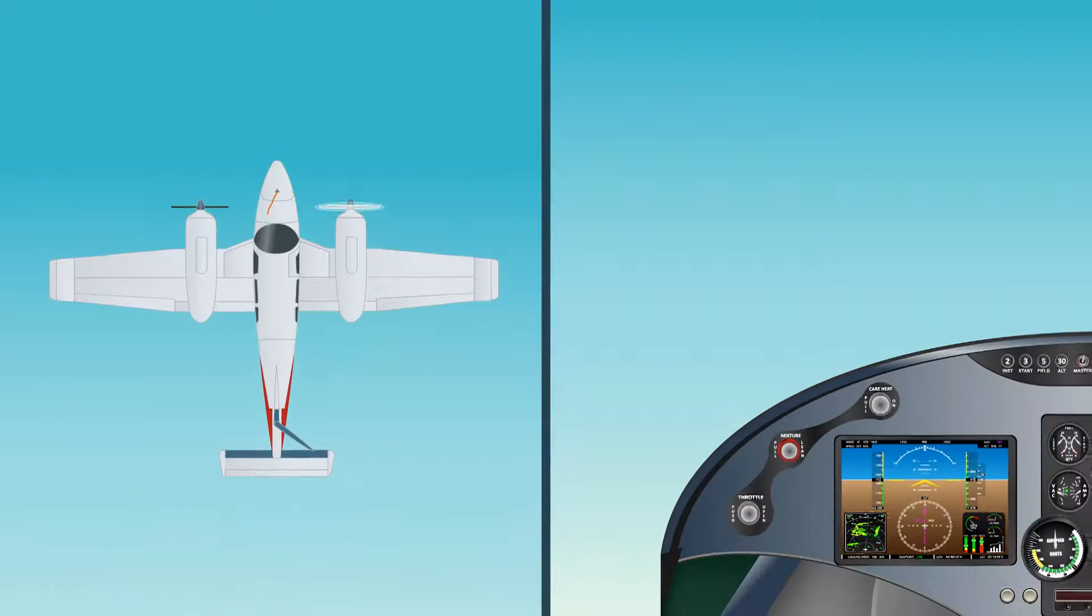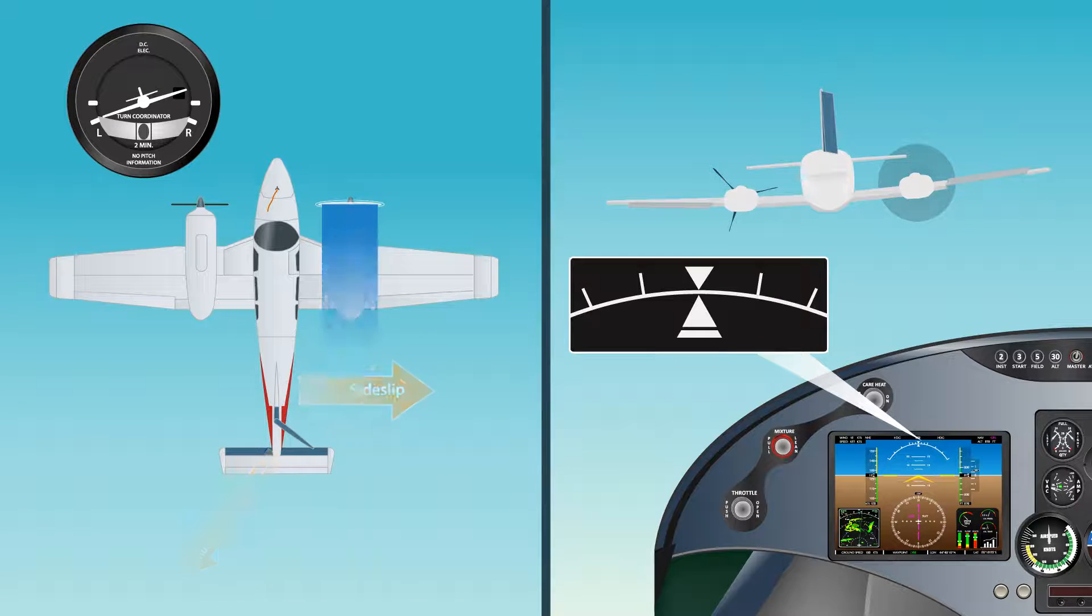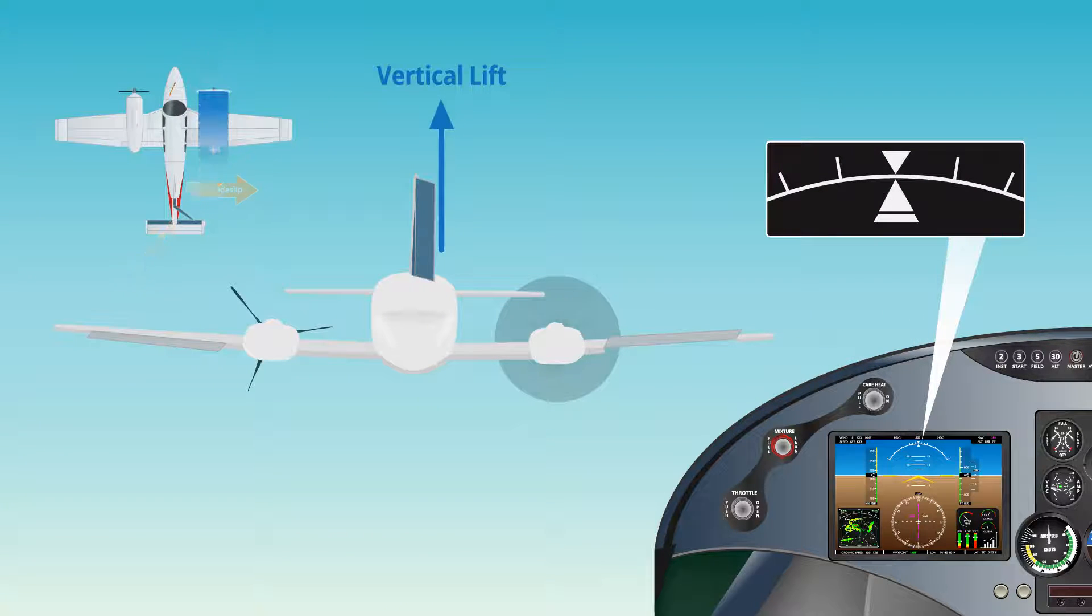If we have one engine inoperative flight with wings level and ball centered, this will require a large rudder input towards the operative engine. This would give you a moderate sideslip toward the inoperative engine. Climb performance is reduced because of the moderate sideslip. With wings level, VMC is significantly higher than published as there is no horizontal component of lift available to help the rudder combat asymmetrical thrust.